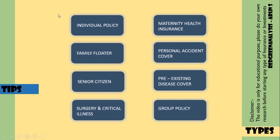Next, let's talk about the family floater plan. If you have a family — husband, wife, and children — they can all be covered under the family floater plan. This plan allows you to cover all family members together.